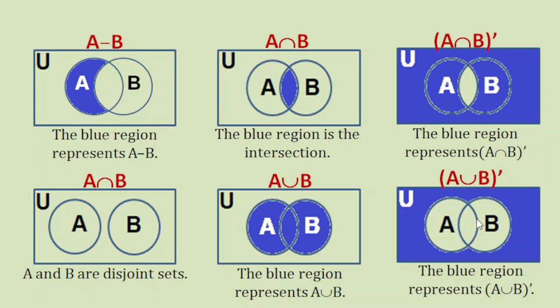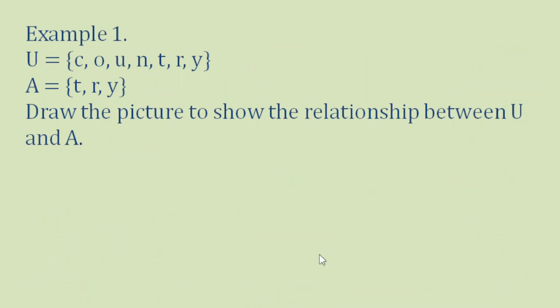We are going to use this idea in drawing our Venn diagram to represent the relationship between universal set U and sets A and B. Let's do Example 1. The elements of U are C, O, U, N, T, R, Y, and the elements of A are T, R, Y. We are going to draw the picture to show the relationship between U and A.